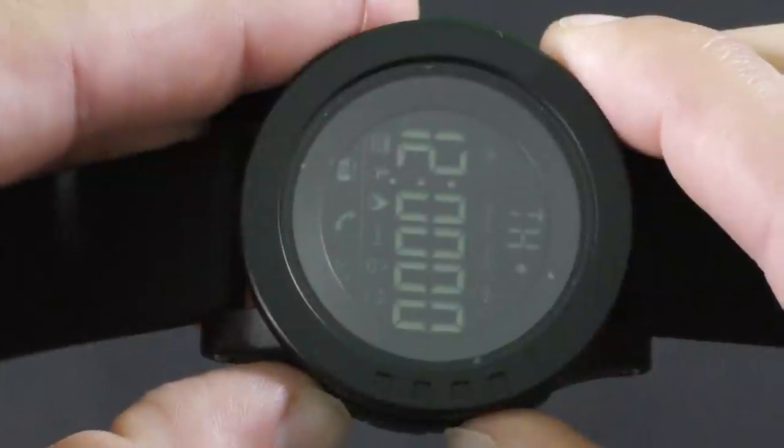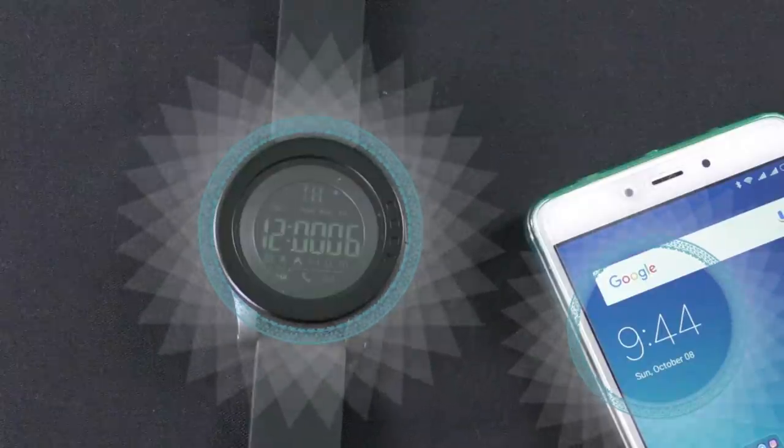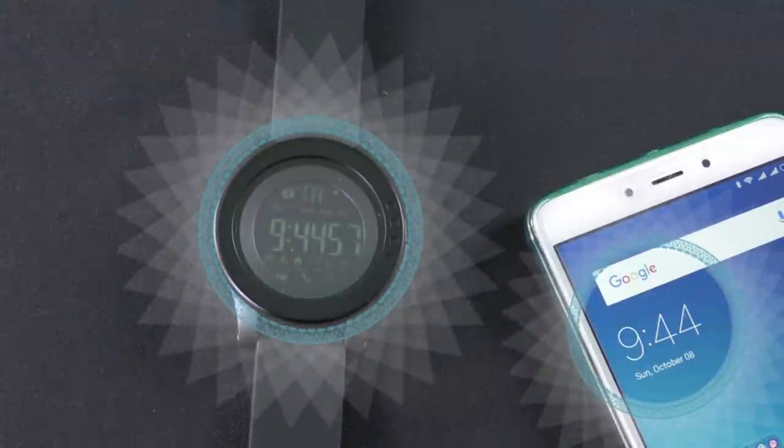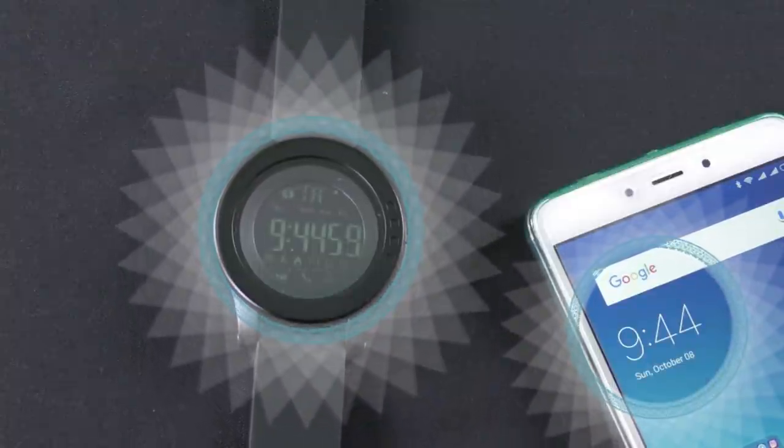To turn the watch on or off, press buttons number one and three at the same time. When the watch is synchronized with your smartphone, it will automatically set the time and the date and update the data that it gathers in the relevant app.